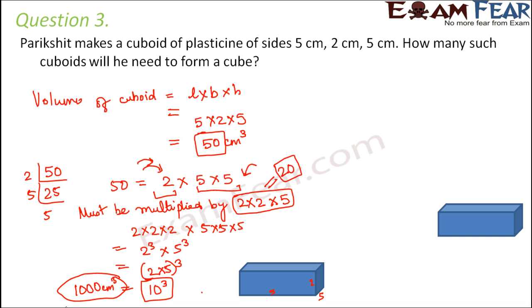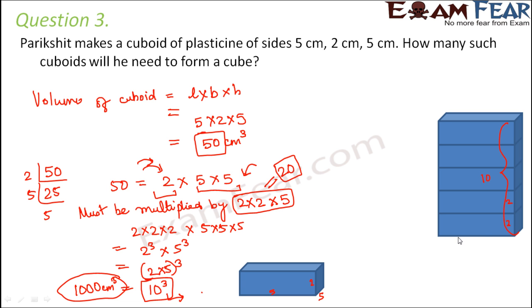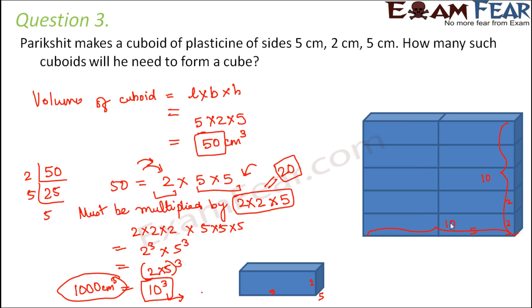Looking at the arrangement: each cuboid has height 2 cm, so when you place 5 such cuboids one above another, the total height becomes 10 cm. The length is 5 cm, so placing 2 cuboids side by side makes the length 10 cm. The width is also 5 cm, so placing another cuboid in front makes the width 10 cm as well. So all three sides become 10 cm, forming a cube.